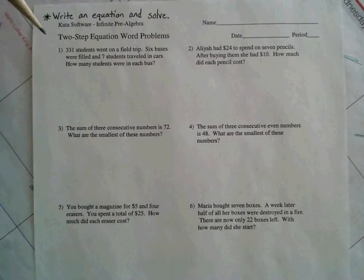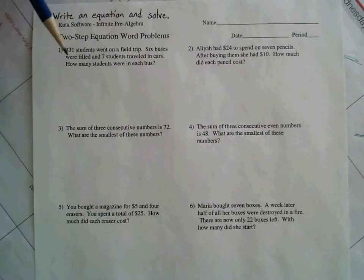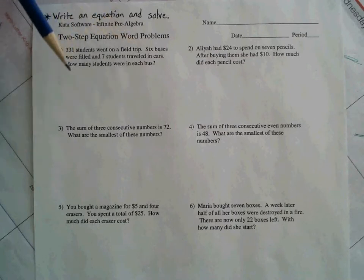Alright, so with this video, we're going to talk about how we can set up some equations based off of these word problems. So check out number one here. It says 331 students went on a field trip, 6 buses were filled, and 7 students traveled in cars. How many students were in each bus?